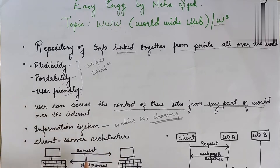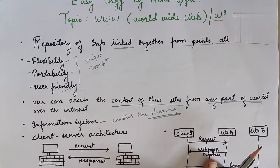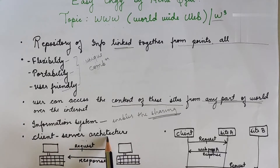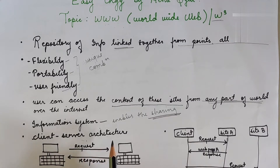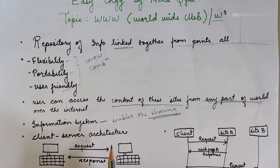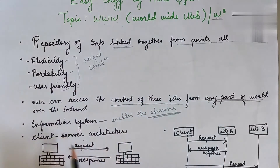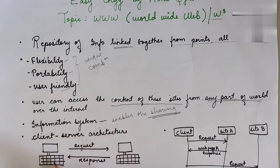In simple words, it has a client-server architecture which sends the request and we get the response. If you want to find any information, you can type it as a request in the browser. For example, if you want to search 'what is the worldwide web,' you just type WWW or 'world wide web' in the browser, and the request will be sent to different servers.